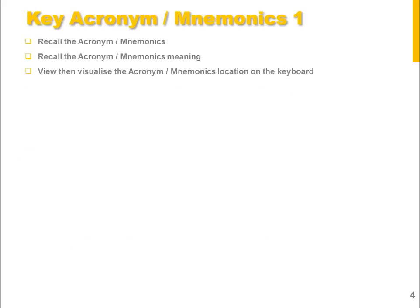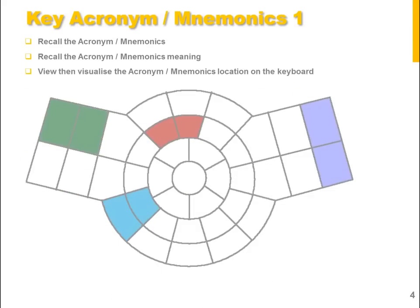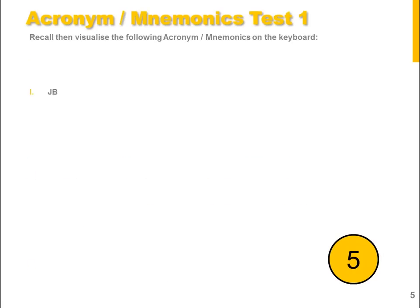Now let's look at them again, but this time you will only see the areas where the letters should be. The green area is JB — James Bond, the blue area is PC — Personal Computer, red is GV — Great Value, and purple is XL — Extra Large. Now let's reinforce that again.